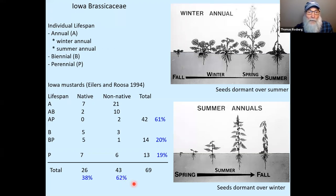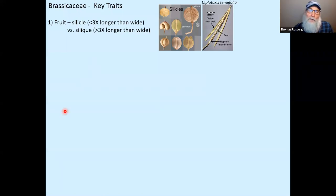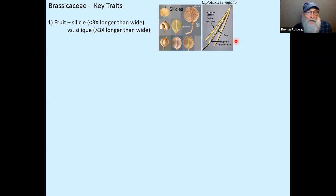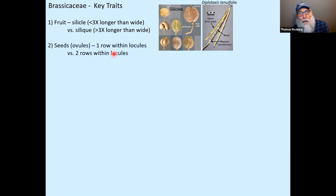Now we'll look at five important characteristics needed when working with mustards and using keys. The first and most critical is the fruit type — whether it's a silicle or a silique. That's not very hard: measure the length and width, divide to get the length-to-width ratio. If it's less than 3, it's a silicle; greater than 3, it's a silique.